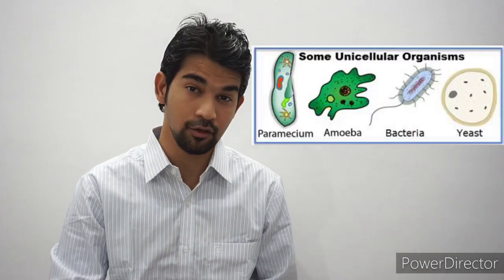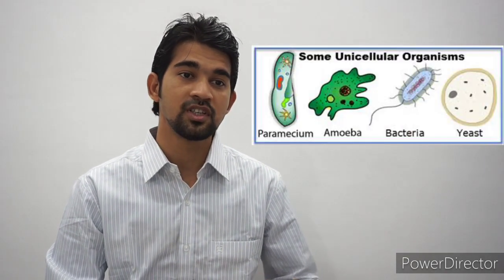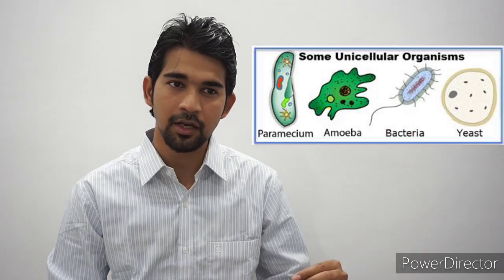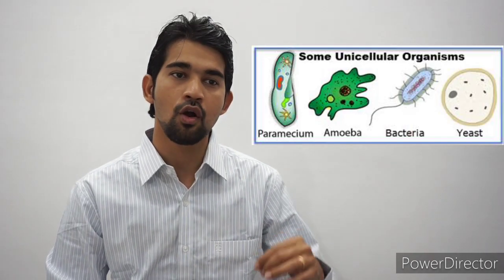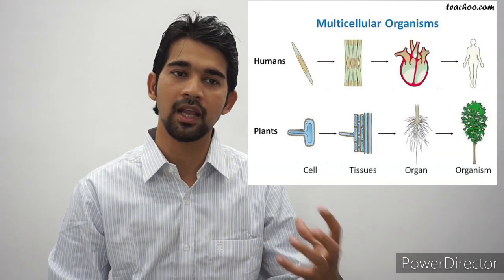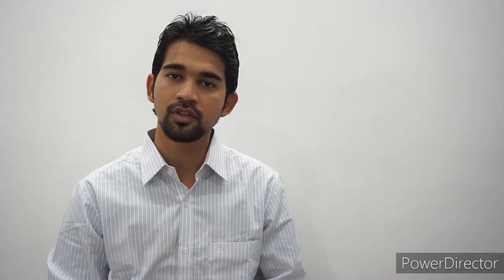Organisms can be classified as unicellular, which consist of a single cell such as bacteria, or multicellular, which includes all plants and animals. Most unicellular organisms are classed as micro-organisms.